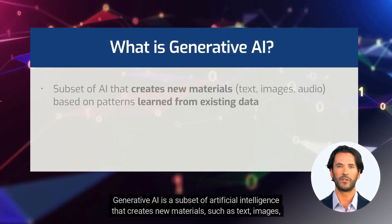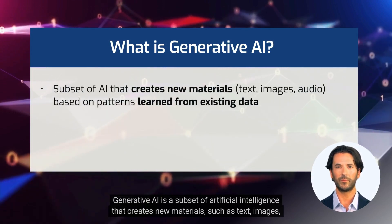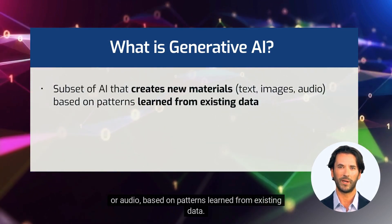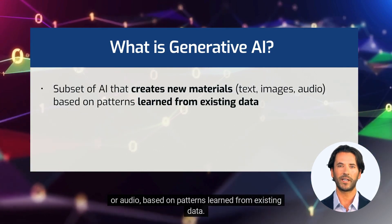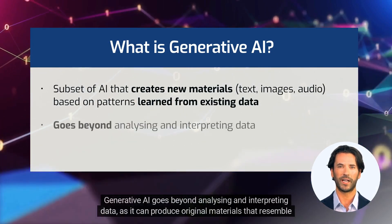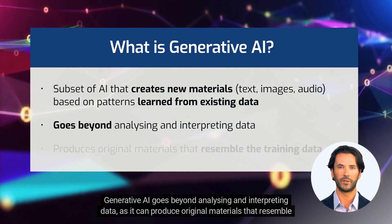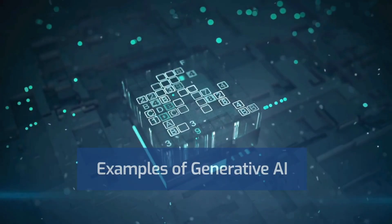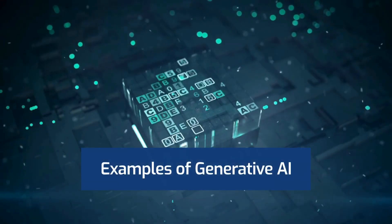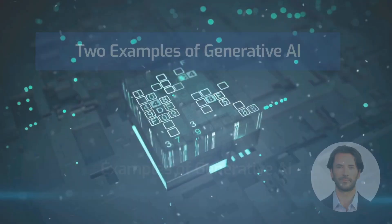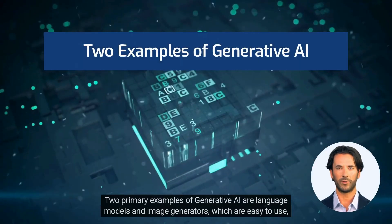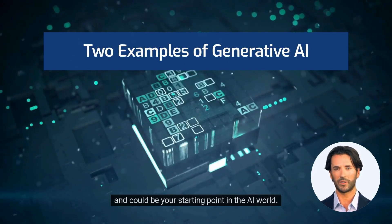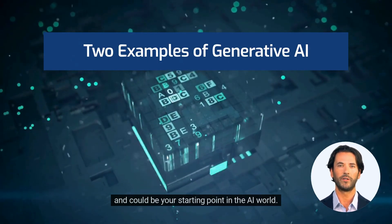Generative AI is a subset of artificial intelligence that creates new materials such as text, images or audio based on patterns learned from existing data. Generative AI goes beyond analyzing and interpreting data, as it can produce original materials that resemble the training data. Two primary examples of generative AI are language models and image generators, which are easy to use and could be your starting point in the AI world.